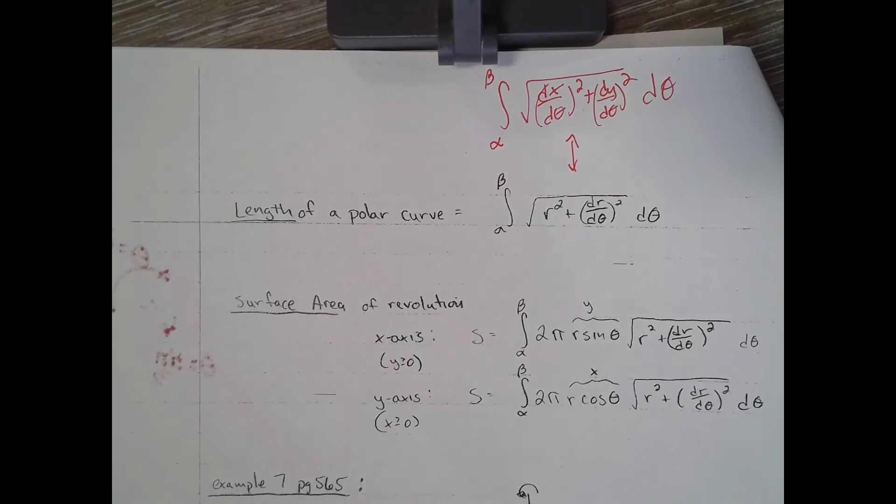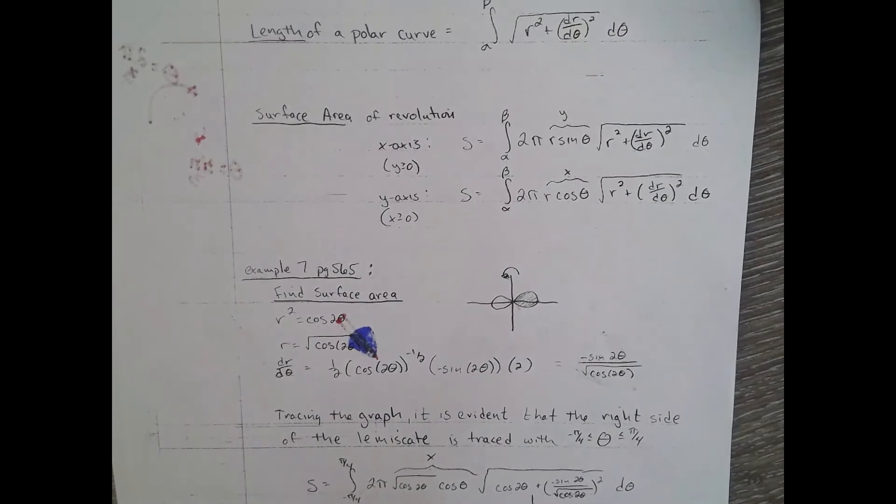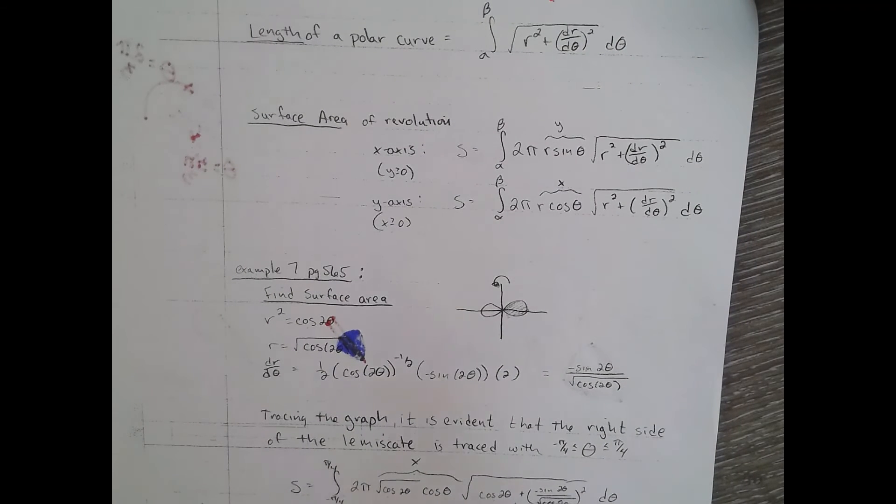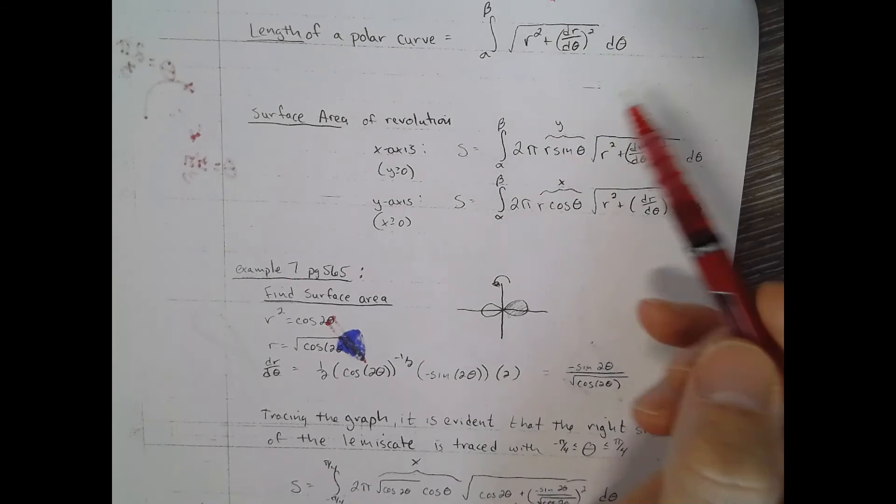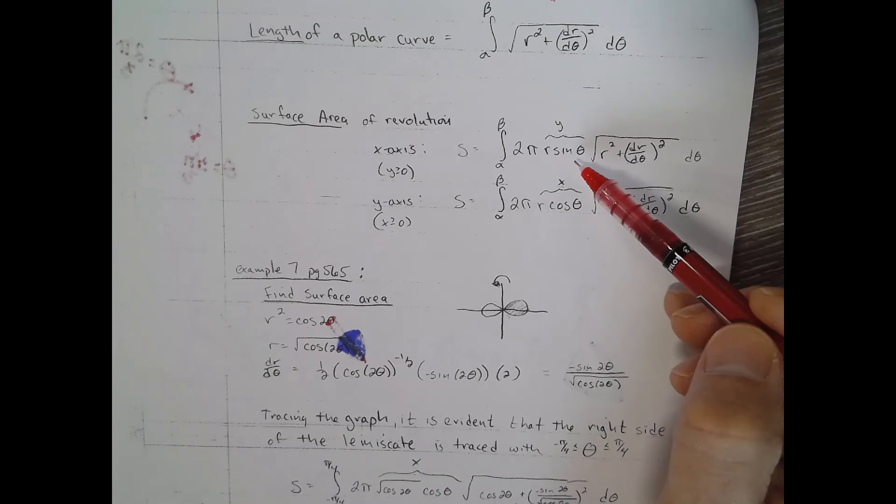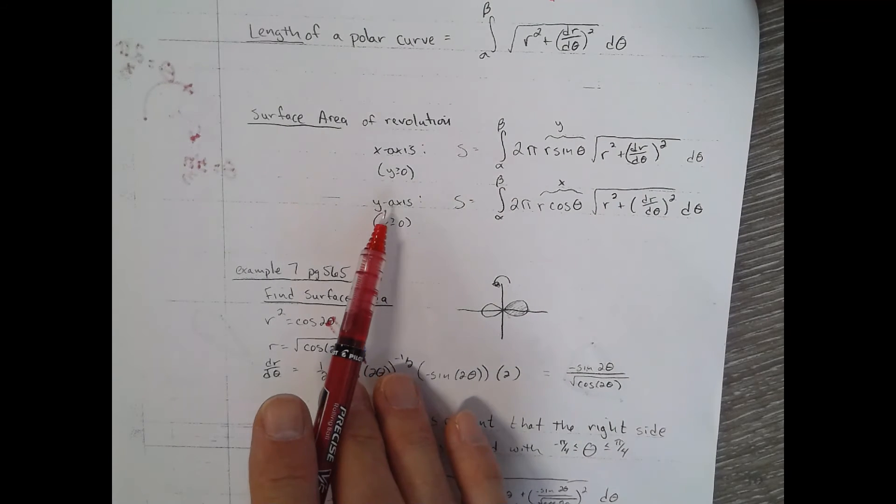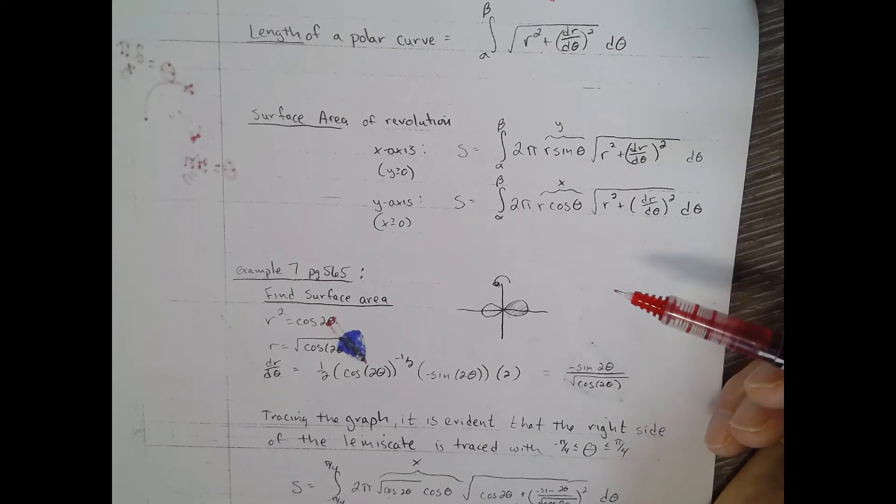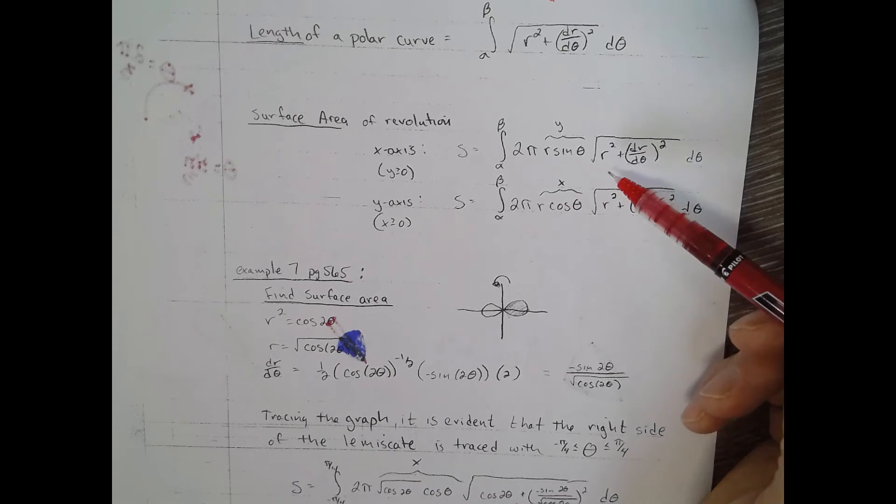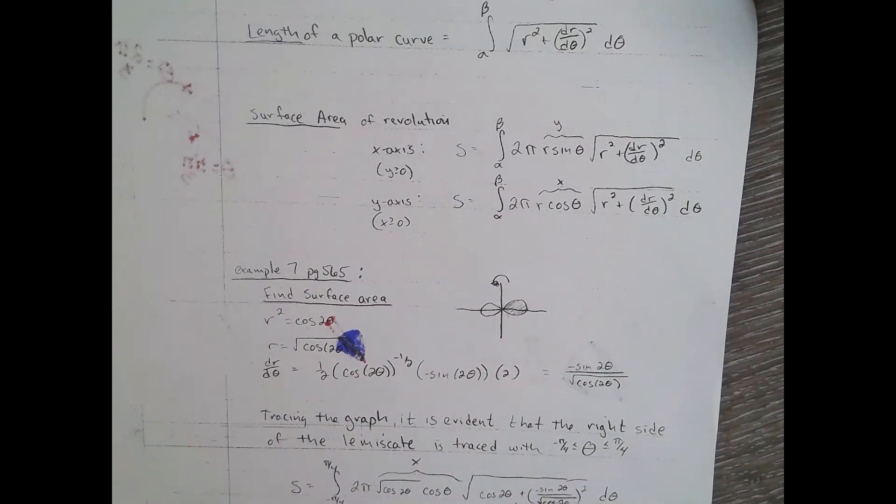Surface area probably looks familiar. It's our third surface area formula. In polar, it's still going to be 2 pi y and then the arc length. And the y is r sine theta, or if you need x, like if it's going around the y axis, x is r cosine theta, and then times the arc length. So just a matter of kind of remembering that surface area formula.